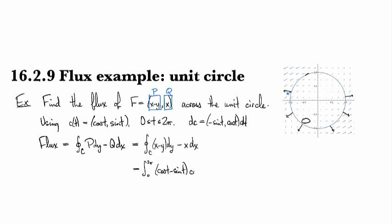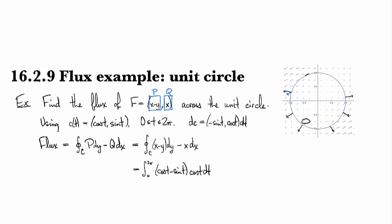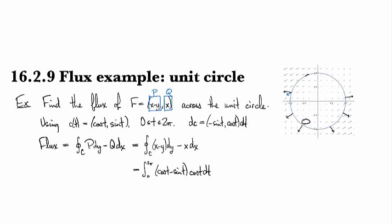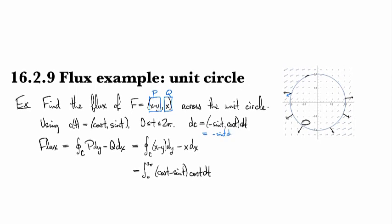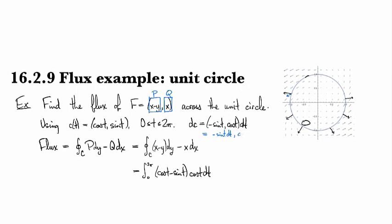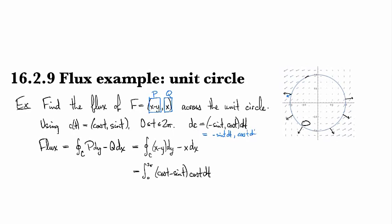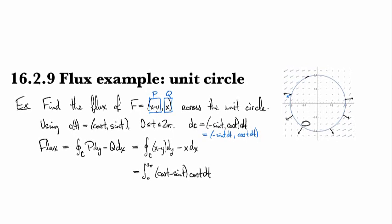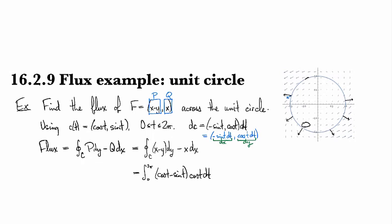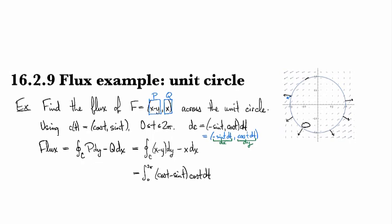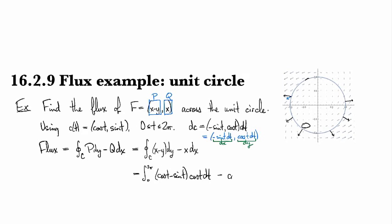And then we have our dy, which is cosine t dt. Maybe I should put that over here: this is minus sine t dt. And so this part here is dx and this part here is dy. So we got that part and then we got that part, and then we have the minus x dx.